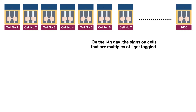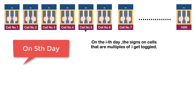For example, on the fifth day, cell numbers 5, 10, 15, and so on are toggled because the day number is a multiple of those cell numbers.